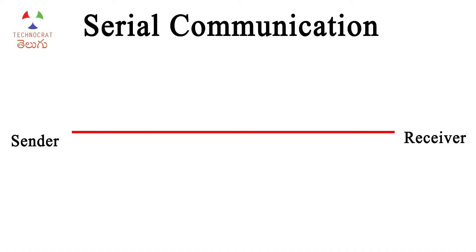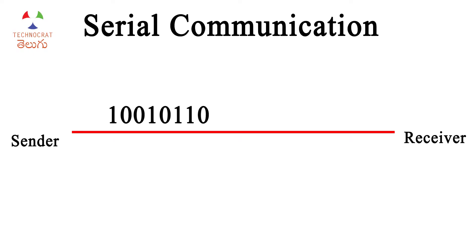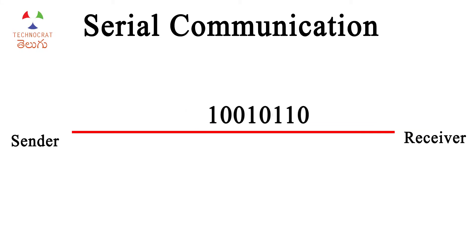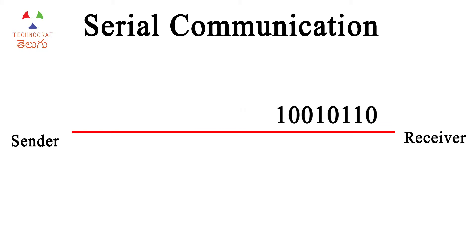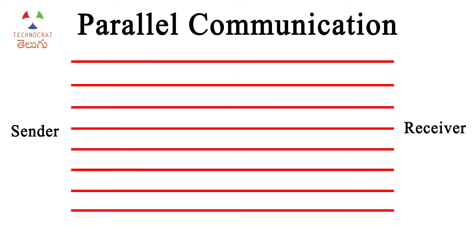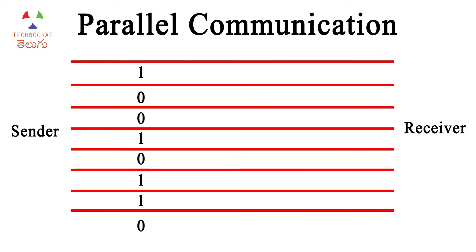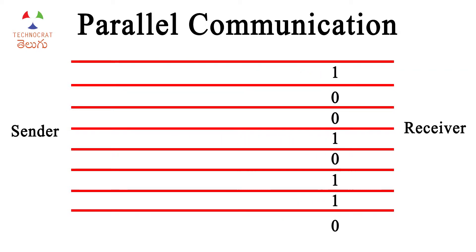In serial communication, we have a receiver on a single line. We used to have data help from this line. We used to have 8 bits of data — 1 byte of data — and pump it from sender to receiver one bit at a time. In parallel communication, we have all the bytes going to the receiver across multiple lines. This should be 1 byte of data, meaning 8 bits, so we have 8 separate lines from the sender to receiver.